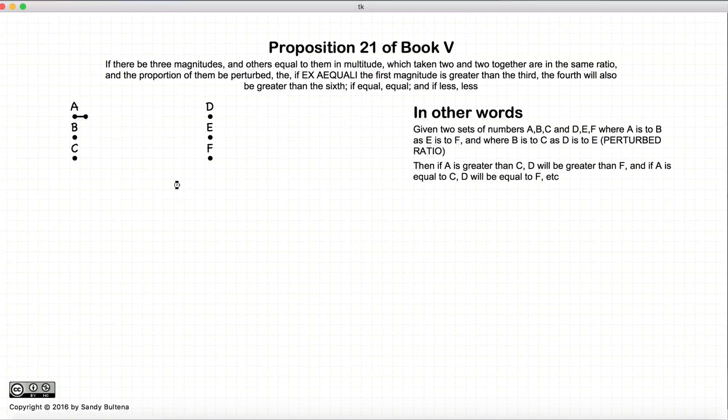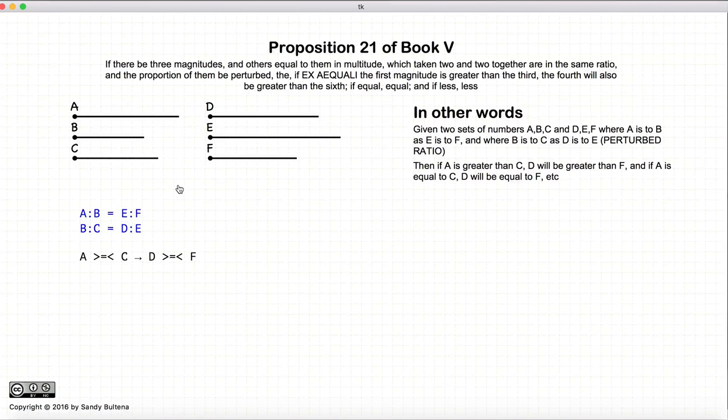So what actually is this proposition about? We're starting with a perturbed proportion. So A to B is equal to E to F. B to C is equal to D to E. These two are the same proportion as those two, and these two are the same proportional as those two. And if this is the initial conditions, then if A is bigger than C, D is bigger than F. If A is equal to C, D is equal to F. And finally, if A is less than C, that implies that D is also less than F.